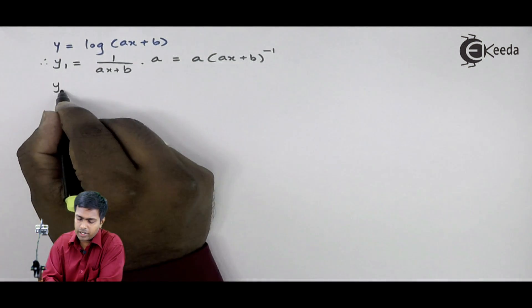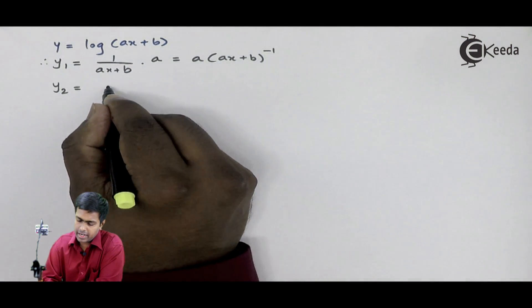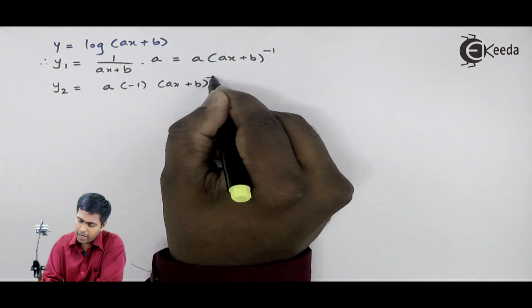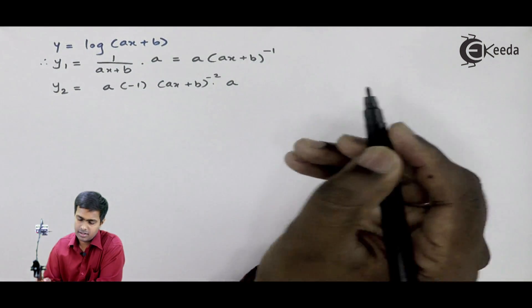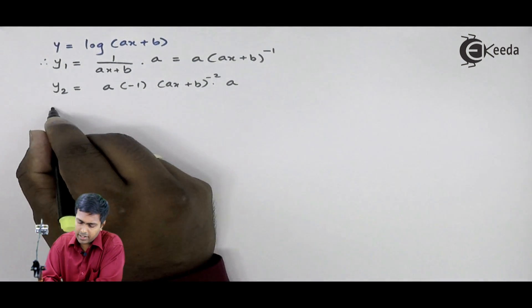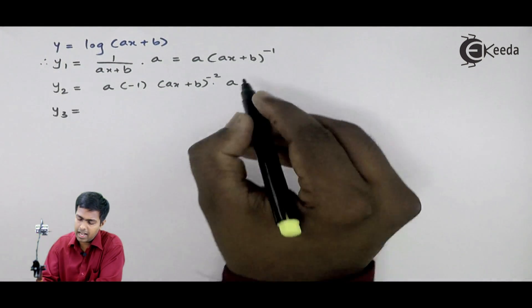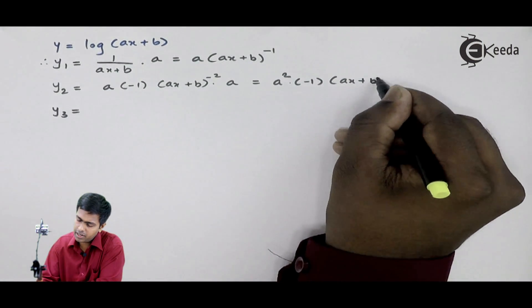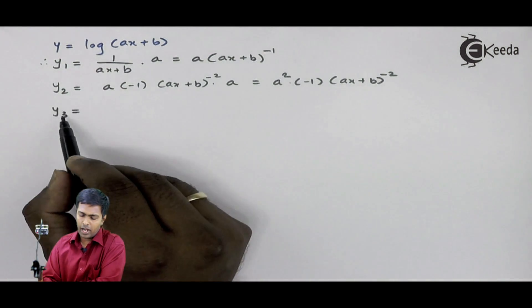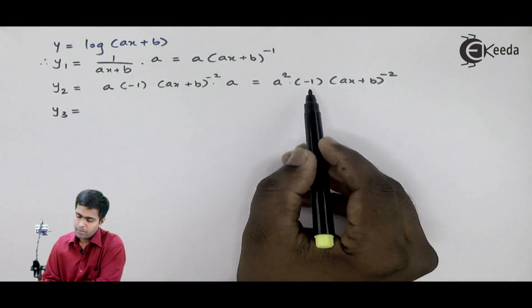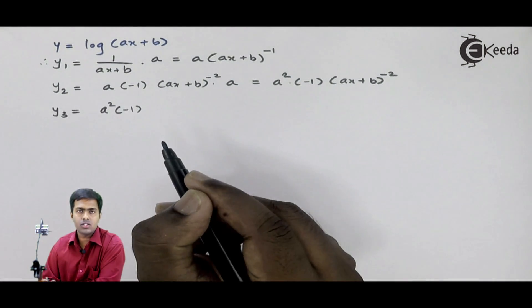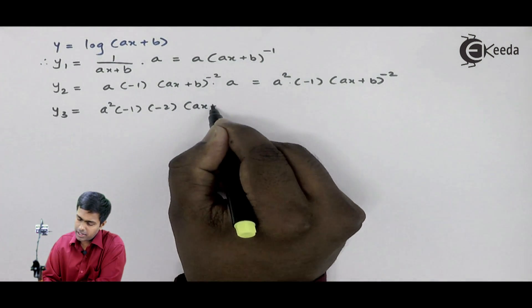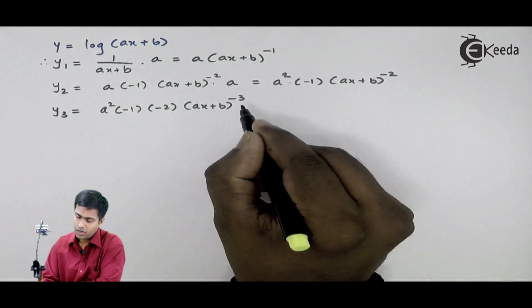Now let us find out what is y2. y2 is nothing but a as it is, and this will become minus 1 (ax plus b) raised to minus 2 into a again. Next, y3. Before finding y3, we will rewrite y2 as a squared into minus 1 into (ax plus b) raised to minus 2. Now let us find out y3 from the answer of y2. a squared as it is, minus 1 as it is since it is constant. The derivative of this is minus 2 into (ax plus b) raised to minus 3 into a.